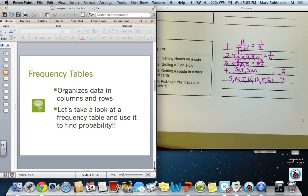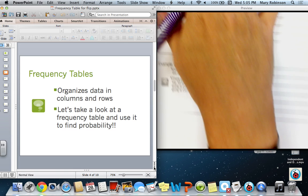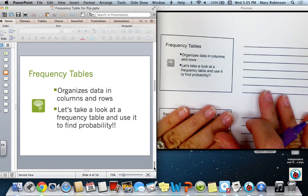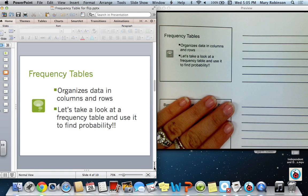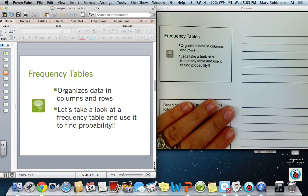For frequency tables, we can organize data in columns and in rows. So let's take a look at a frequency table, and we're going to use that frequency table to find some probability.